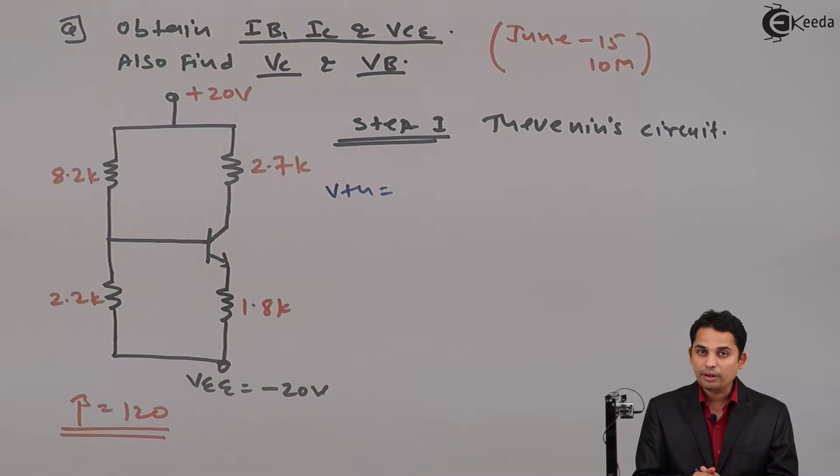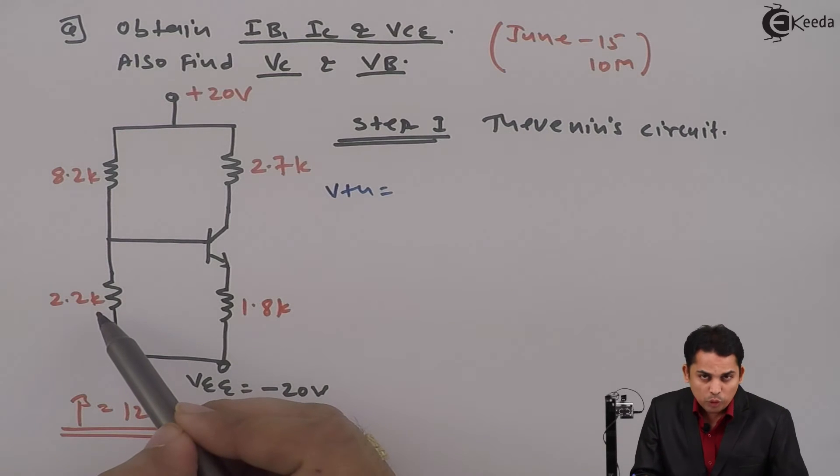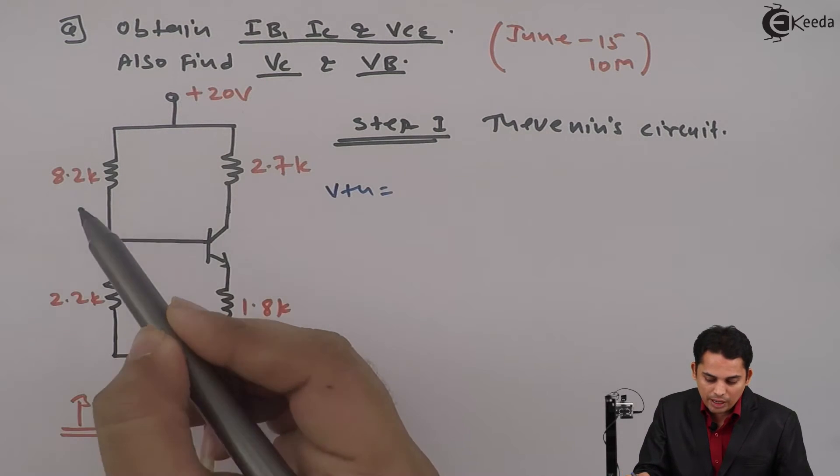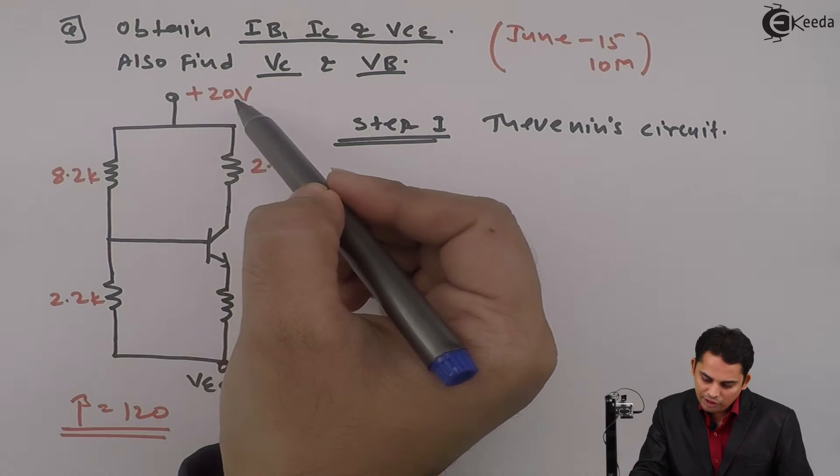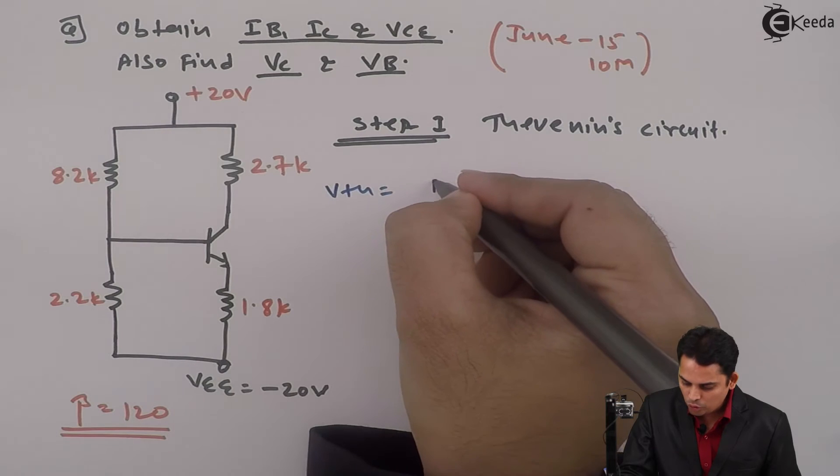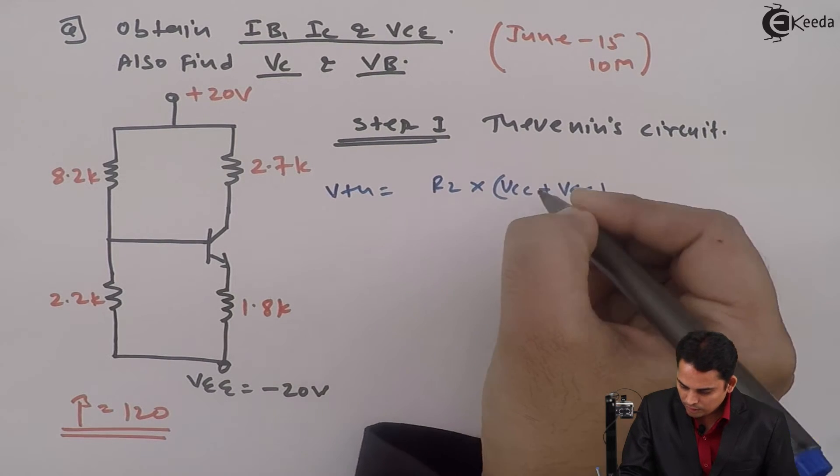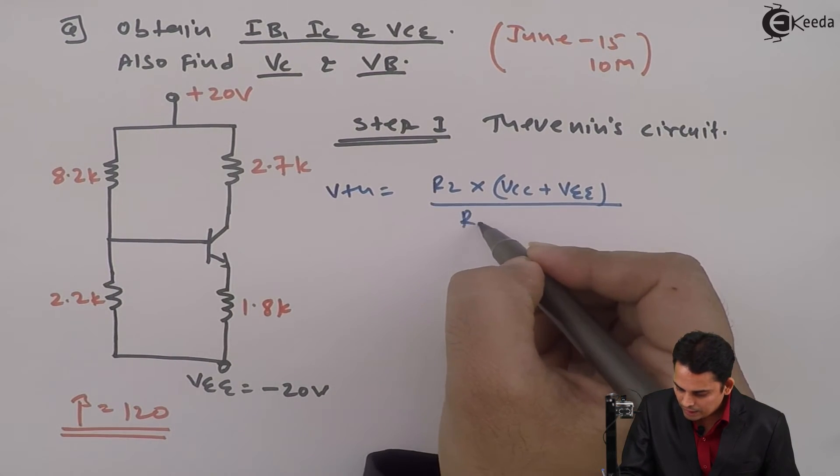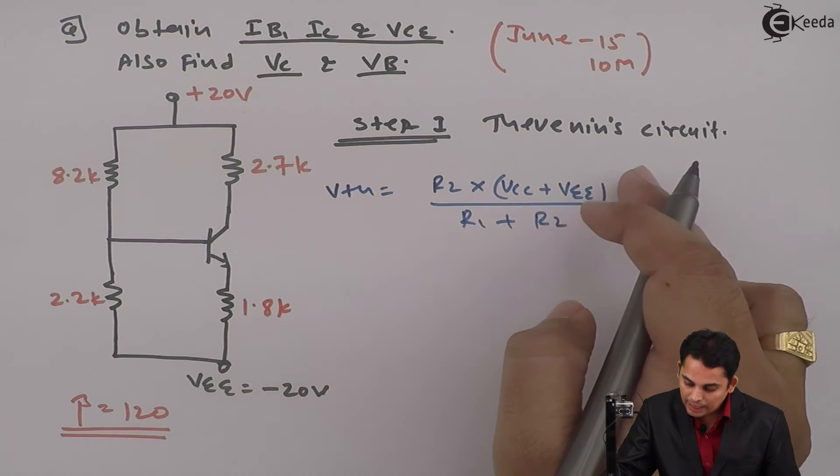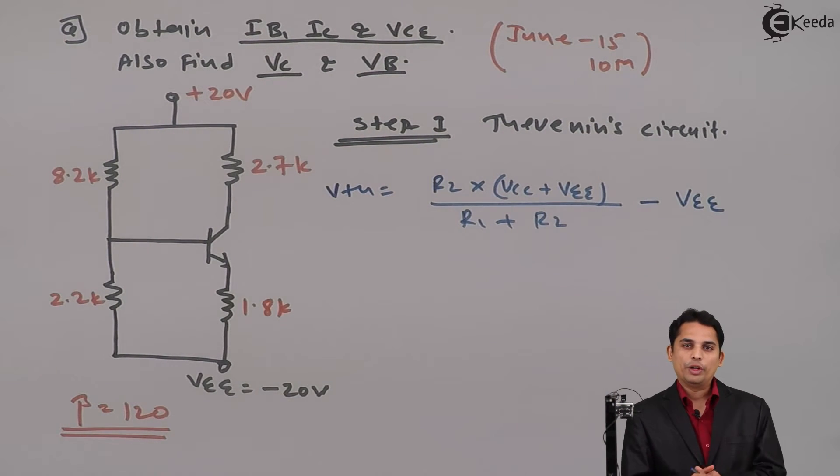Now see the formula very carefully. In this particular case the formula will become R2 multiplied with VCC plus VEE, because now R1 and R2 are under influence of VCC as well as VEE. And hence I will write the formula as R2 multiplied by VCC plus VEE divided by R1 plus R2. We will not stop here. From this entire term we will subtract VEE. This is very important.